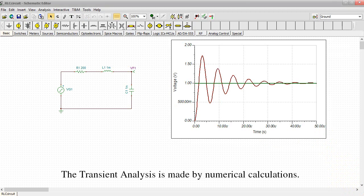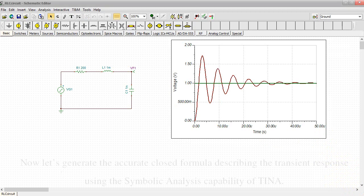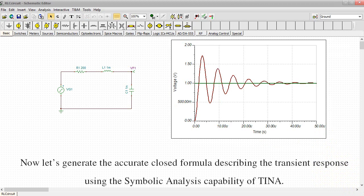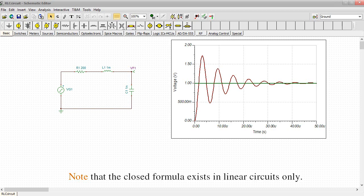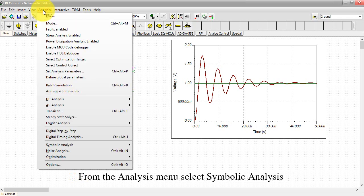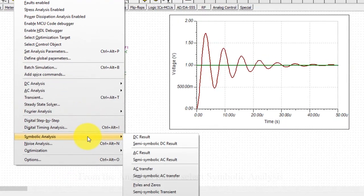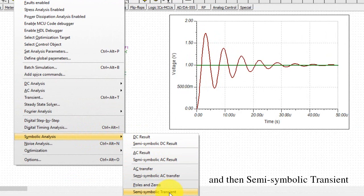The transient analysis is made by numerical calculations. Now let's generate the accurate closed formula describing the transient response using the symbolic analysis capability of TINA. Note that the closed formula exists in linear circuits only. From the Analysis menu, select Symbolic Analysis and then Semi-Symbolic Transient.